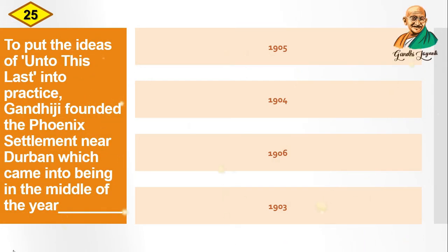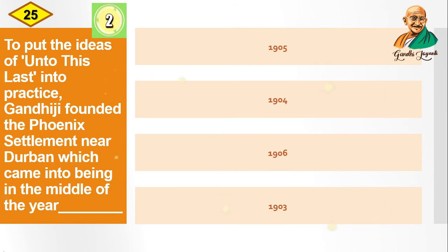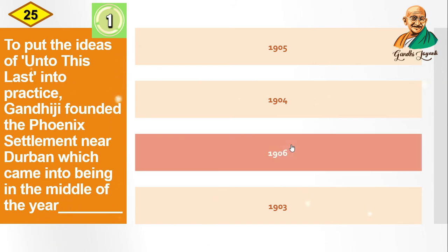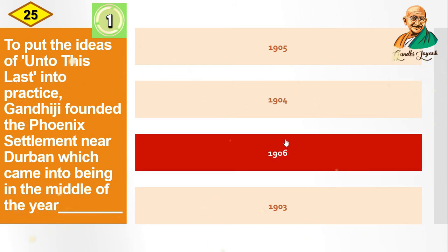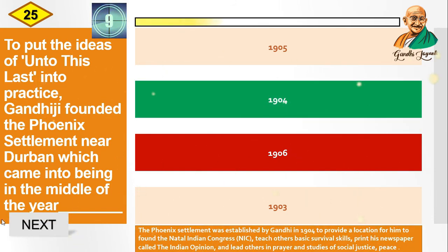Question: To put the ideas of "Unto This Last" into practice, Gandhiji founded the Phoenix Settlement near Durban. In which year did it come into being? Options are: 1905, 1904, 1906, 1903. The correct answer is 1904. The Phoenix Settlement was established by Gandhiji in 1904 to provide a location for his activities.